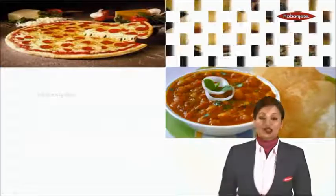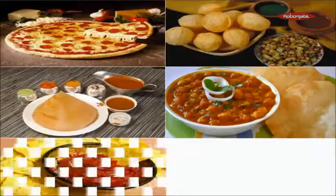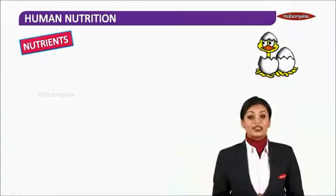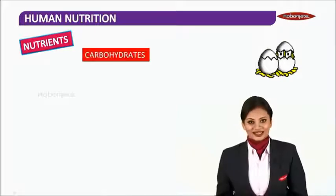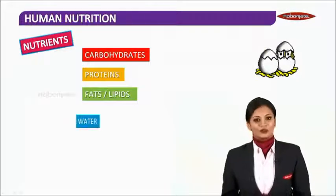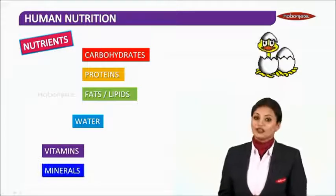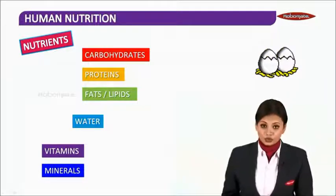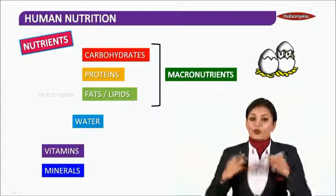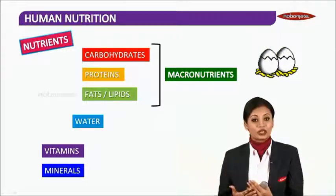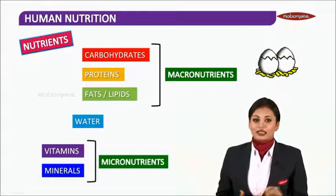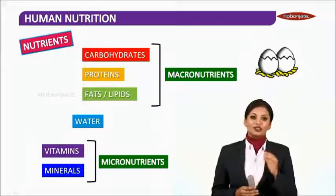Let us see some food substances. These food items contain nutrients. The nutrients are carbohydrates, proteins, fats and lipids. Also, there is water, vitamins, as well as minerals. Out of all these nutrients, carbohydrates, proteins and fats are described as macronutrients because they are required and consumed in large quantities. Vitamins and minerals are known as micronutrients because they are consumed in smaller quantities.